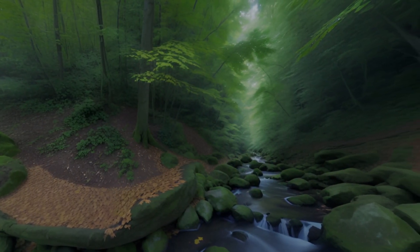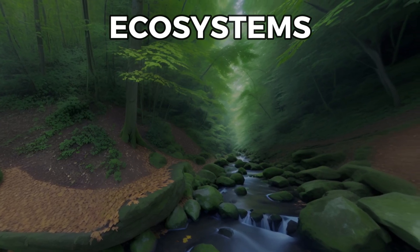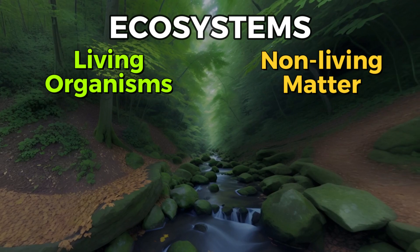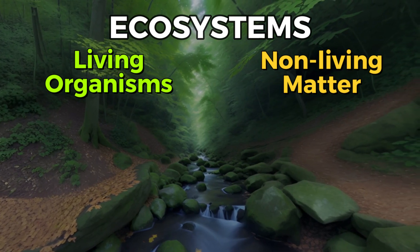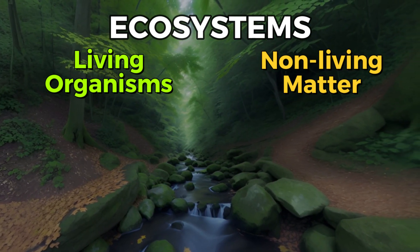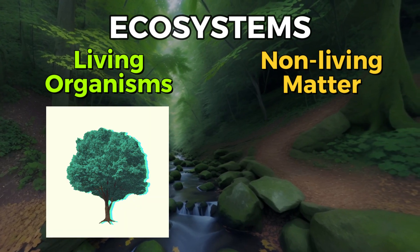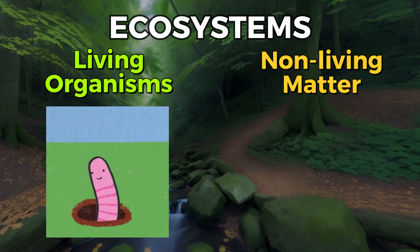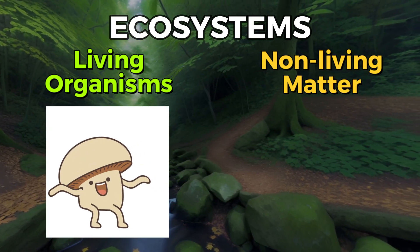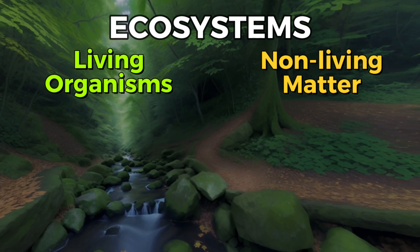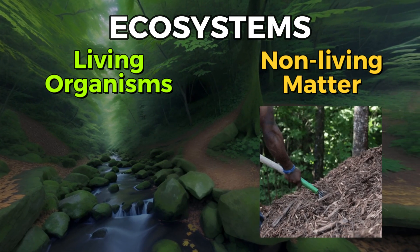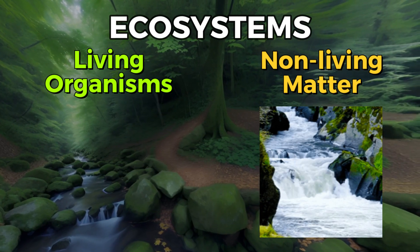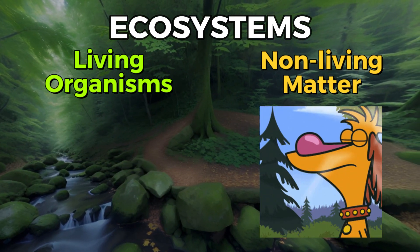In this video, we are going to be learning about ecosystems. Ecosystems are made up of living organisms and non-living matter. In a forest ecosystem, this could include things like plants, birds, mammals, worms, and fungi, as well as non-living matter like nutrients in the soil, water in the rivers and ponds, and the air that the organisms breathe.